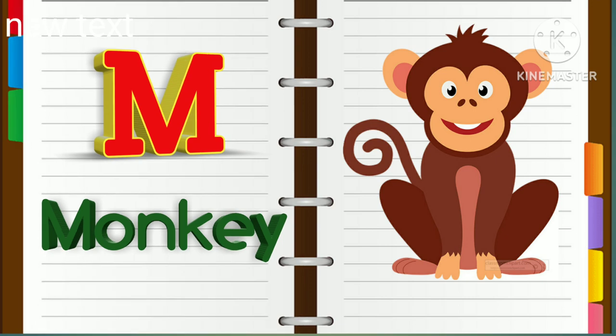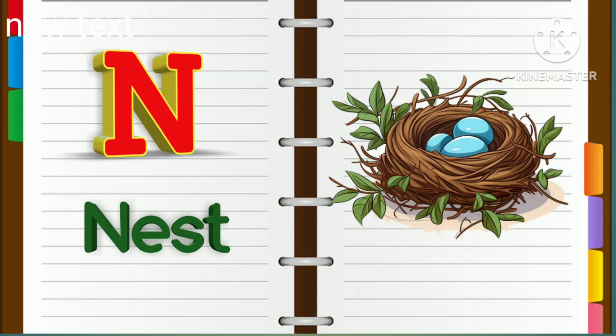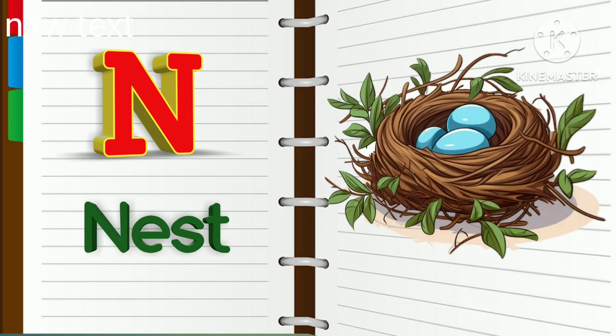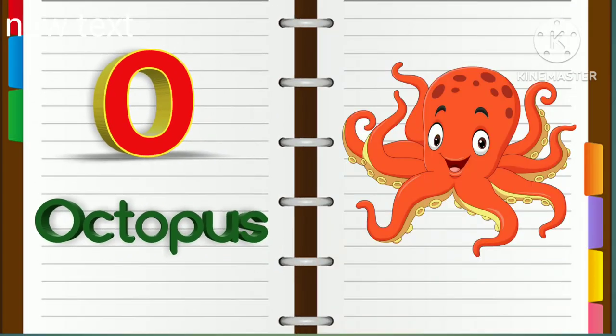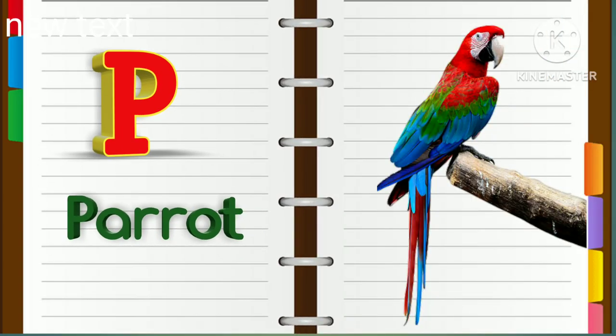M. M for monkey. N. N for nest. O. O for octopus. P. P for parrot.